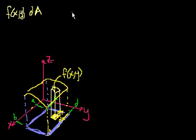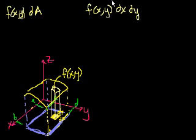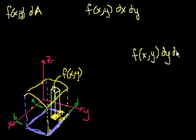I'm going to write it in every different way. So we could also have written this as f of xy times dx times dy. And of course, since multiplication is associative, I could have also written it as f of xy times dy dx. These are all equivalent. And these all represent the volume of this column that's between this little area here and the surface.